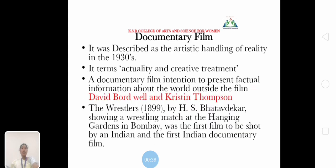What is a documentary film? It was described as the artistic handling of reality in the 1930s in terms of actuality and creative treatment. A documentary film is intended to present factual information about the world outside the film, as defined by David Bordwell and Kristin Thompson. A great example is The Wrestler — in 1899, a wrestling match at the Hanging Gardens in Bombay was the first film shot by an Indian, making it the first Indian documentary film.